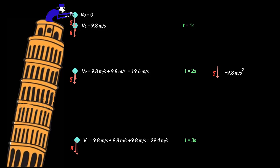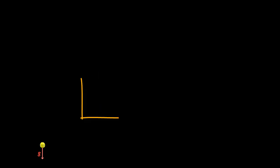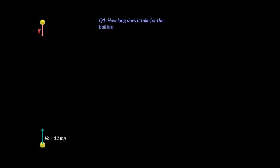The best way of understanding the motion of an object falling under gravity is to do a few problems. Let us say you throw a ball vertically up along the y-axis with an initial velocity of 12 meters per second. The first question is: how long does it take for the ball to reach the maximum height?